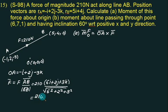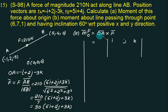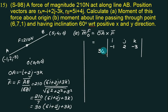So F equals 2, 1, 0 divided by 7, giving a factor of 30 outside. In the determinant, the first row has the OA coefficients: minus 1, 2, minus 3. The second row has F coefficients with 30 outside: 6, 2, 3.